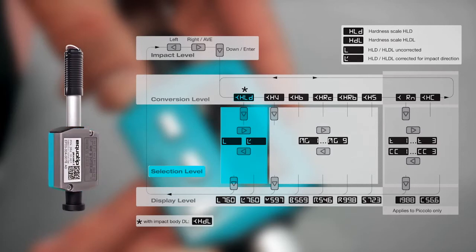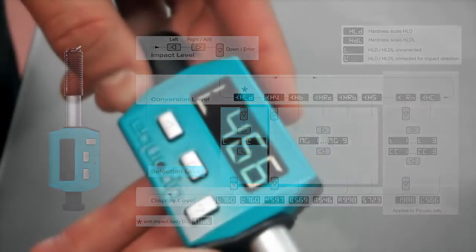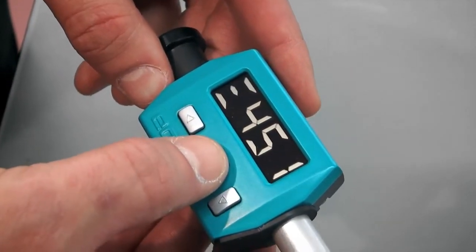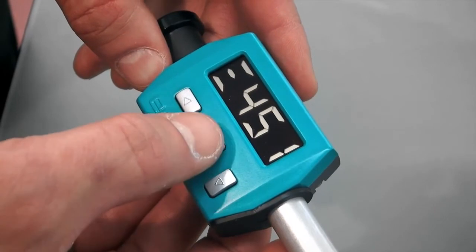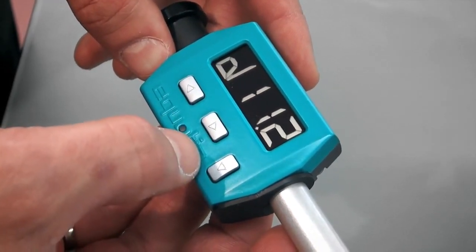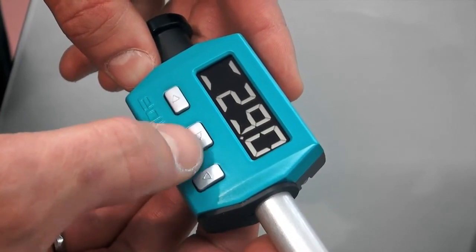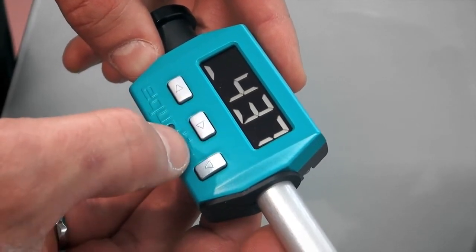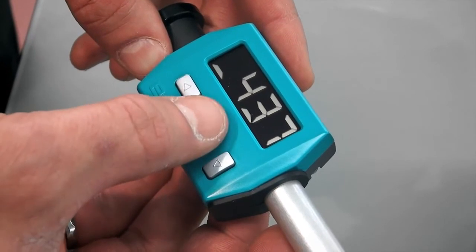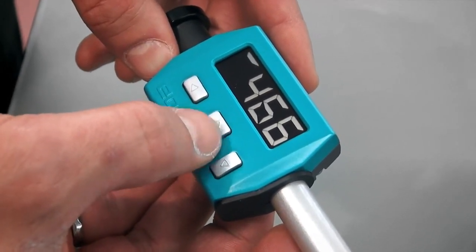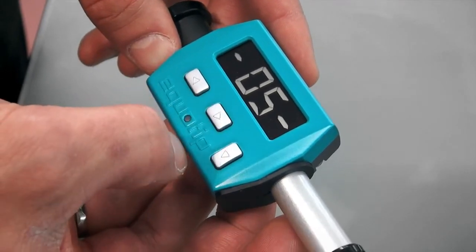To enter the average mode, press the right button. If you need to delete a measurement during a series, press the left key. After the needed number of measurements, press the right key. The display shows average, standard deviation, range, minimum, maximum and other measurement parameters.